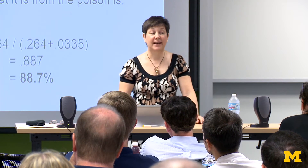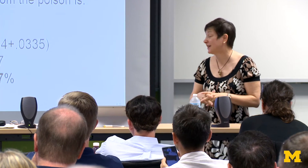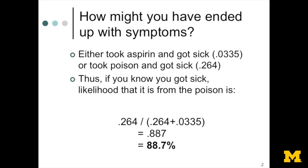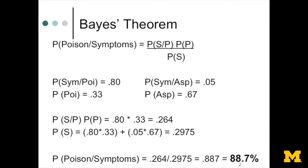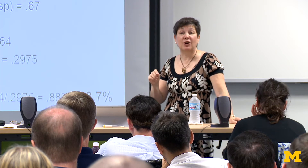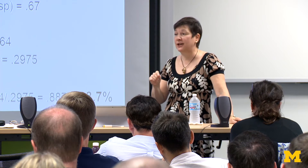If you know that you got sick, the likelihood that it came from the poison is 88.7%, or almost 89%. That is, 0.264 — the likelihood you took the poison and got sick — divided by the total ways you could have gotten sick (aspirin or poison). This is Bayes' theorem. The likelihood of having taken the poison has increased dramatically because you have symptoms and because it's so unlikely you would have gotten sick had you taken the aspirin.